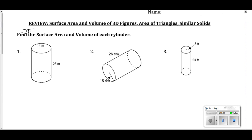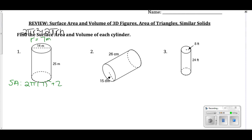My surface area formula is 2πr² + 2πrh. I know my diameter is 14, which makes my radius 7 meters. So my surface area is 2π(7²) + 2π(7)(25). I plug all that into my calculator and I get 448π meters squared, or 1,407.433 meters squared. Either answer is fine — check which one your teacher prefers.